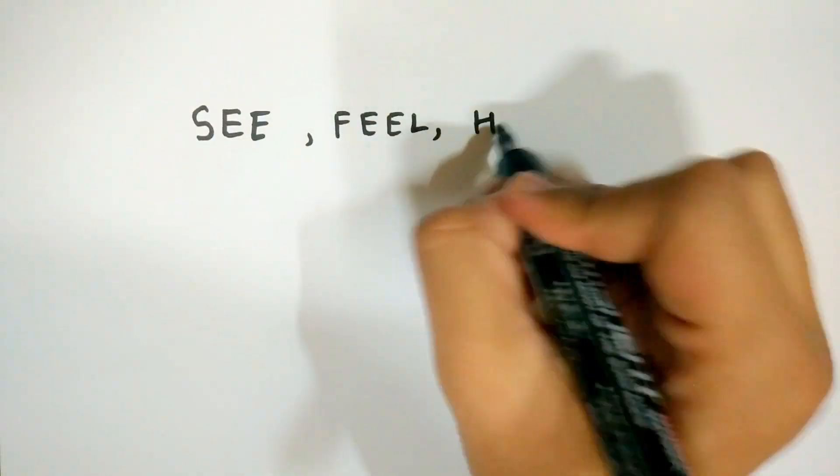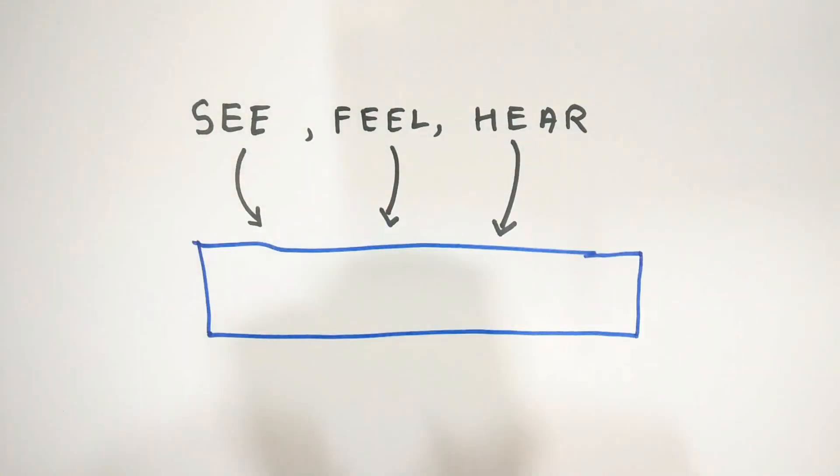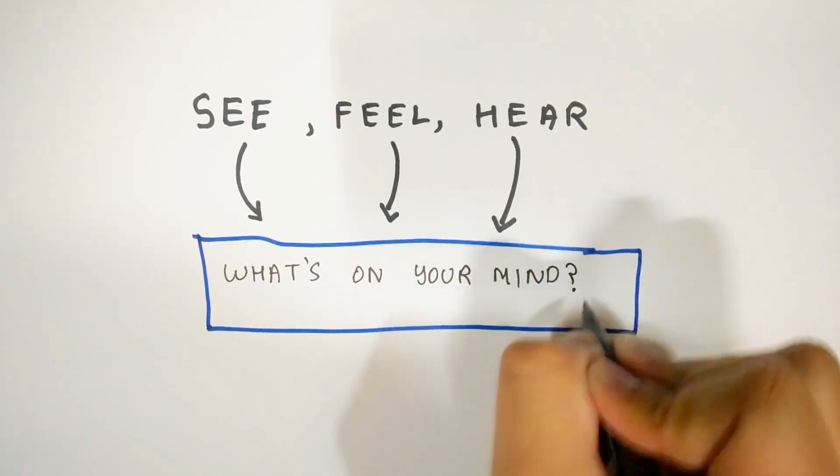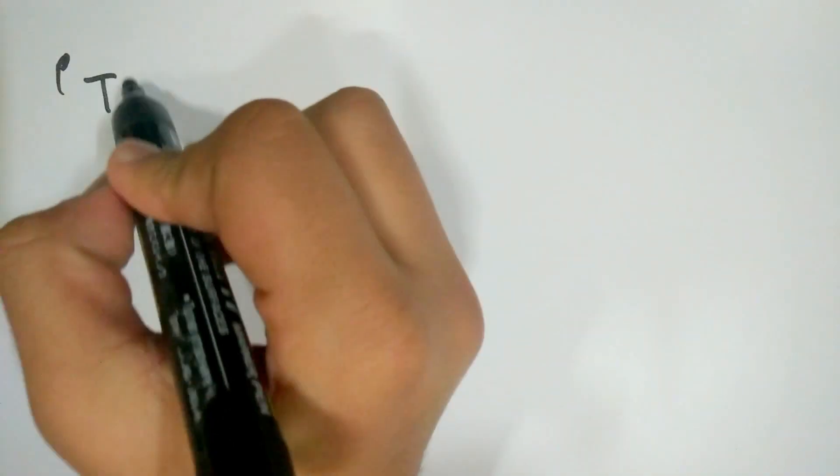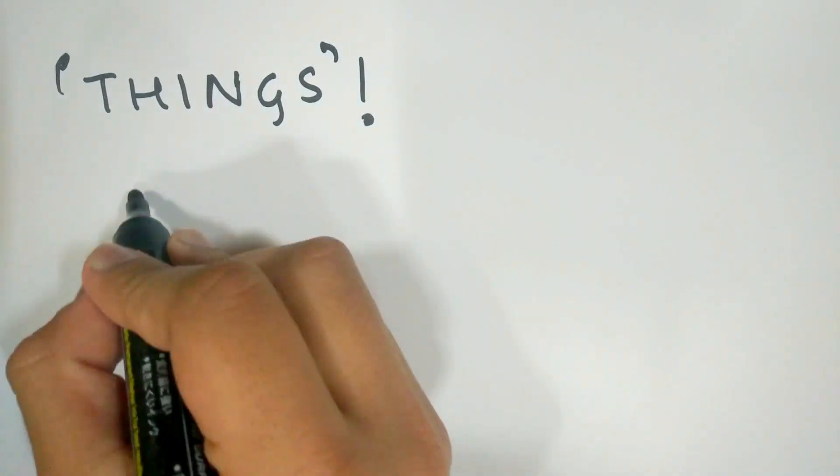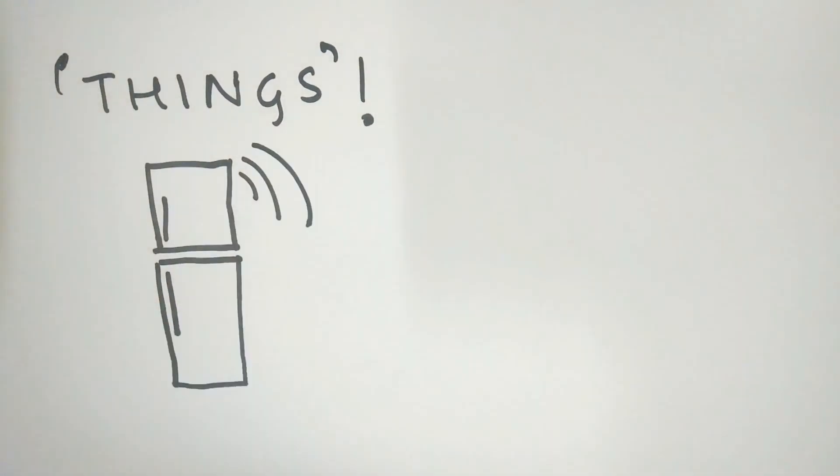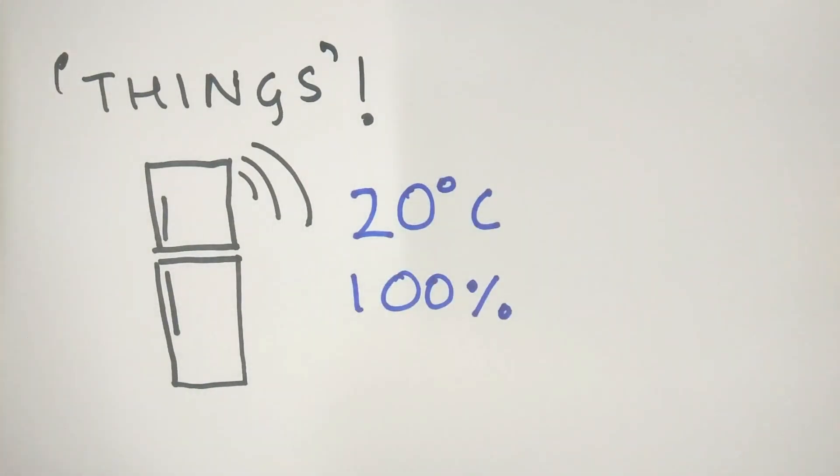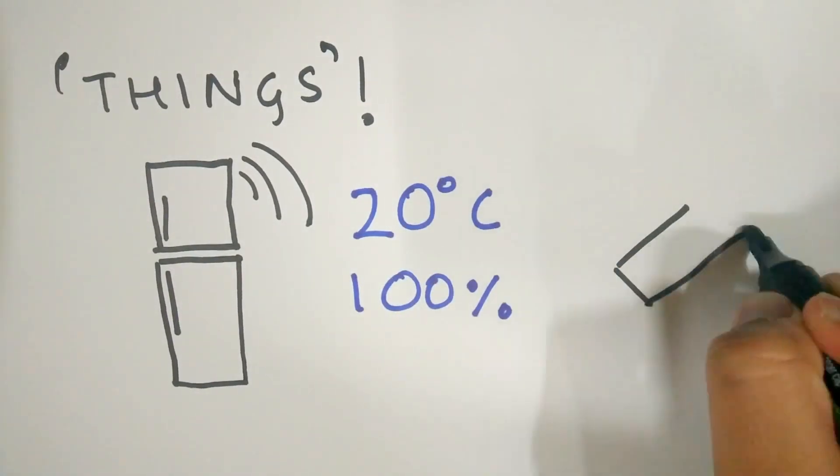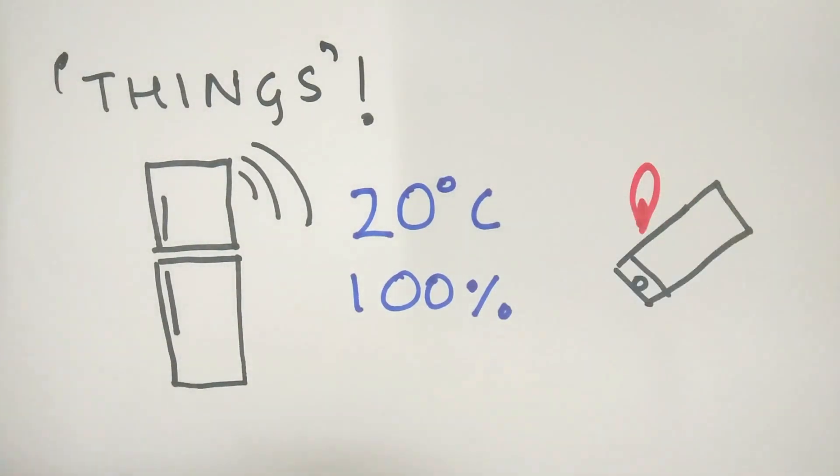People have senses - they can see, feel, hear, and share the amalgamation of these senses on the internet. People communicate, and that's the whole point. Things also have senses. Your refrigerator can know the temperature and humidity of the surroundings and adjust the internal temperature accordingly. Your phone knows its location on Earth and how it is oriented in three-dimensional space.